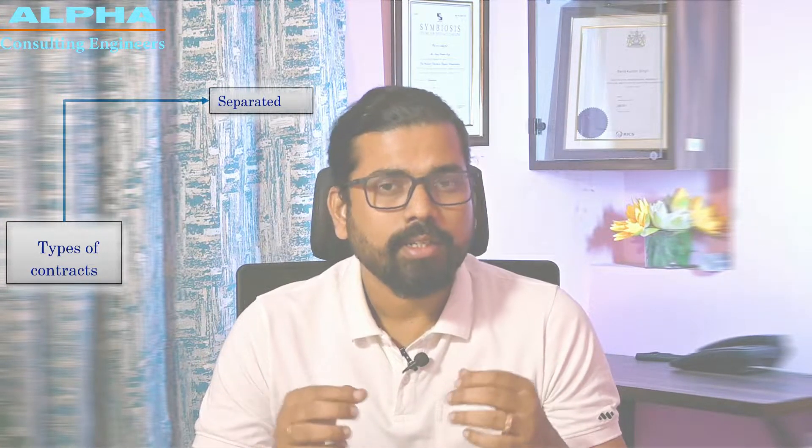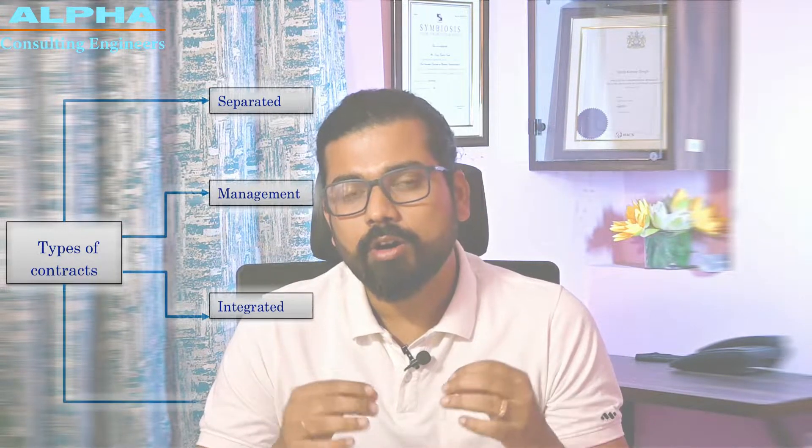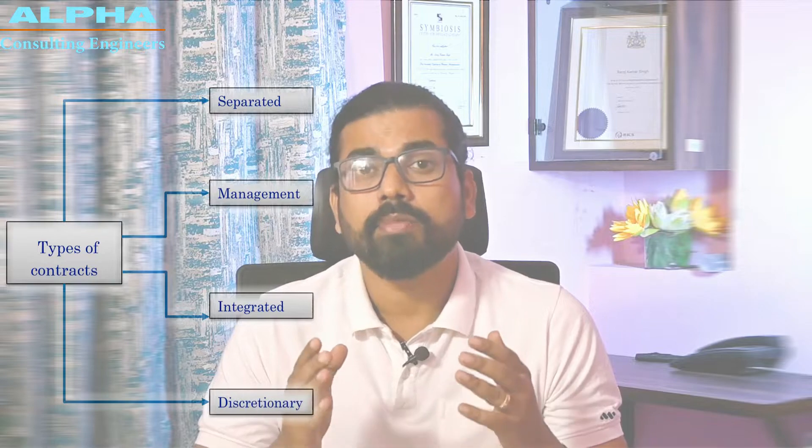Any construction contract is basically divided into four major types: number one is separated type of contract, two is management type of contract, three is integrated contracts, and four is discretionary contracts. This division of contracts is based on the nature of the project.